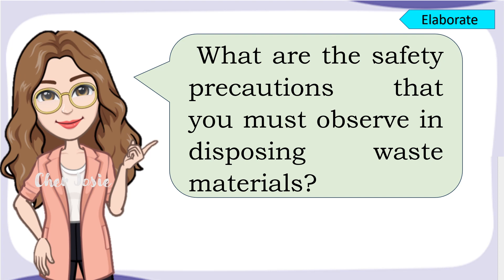What are the safety precautions that you must observe in disposing waste materials? Very good! Proper segregation of materials should be observed. Do not mix decaying materials with non-decaying materials. The sharp objects should be placed in a cardboard box and close or tape the box and mark it as trash. Never touch waste materials with your hand. Use adequate equipment when handling waste materials to avoid puncture from sharp objects. Aside from that, recycling non-decaying waste materials such as plastic bottles — they can be made into decoration and pots. We should also reuse plastic bags.